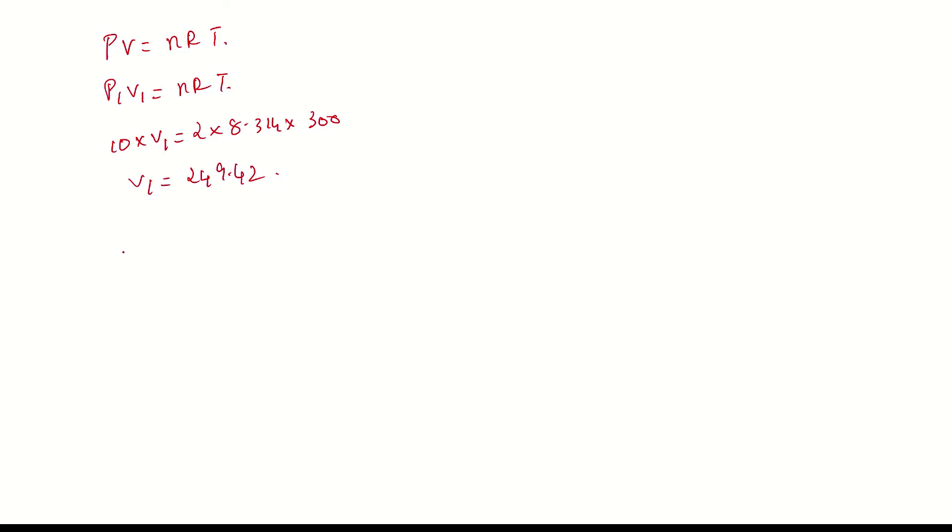We now find the final volume. For adiabatic expansion, the formula gives P₁V₁^γ = P₂V₂^γ. So, 10 × (249.42)^(5/3) = 1 × V₂^(5/3). Therefore, V₂ = 992.96.